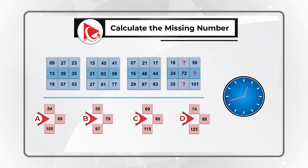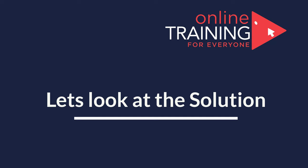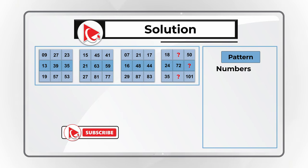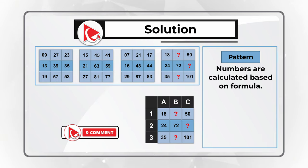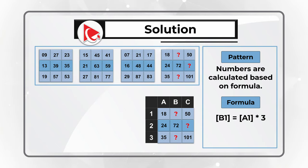Give yourself 20 to 30 seconds by pausing this video to see if you can come up with the solution. I am moving forward to reveal my version. If you have a better way to solve it, please post in comments. Numbers are calculated based on a formula. If we break down the matrix into columns A, B, and C, and rows 1, 2, and 3, the formula is: B1 equals A1 multiplied by 3, and C1 equals B1 minus 4.